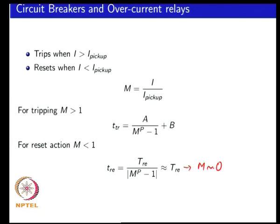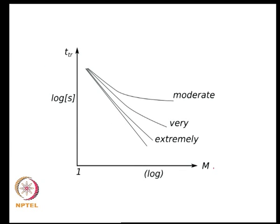In these expressions, A, P, B, and T_RE are constants depending on the type of characteristic you are trying to emulate in your circuit breaker. Depending on the values of A, B, and P, you can have different definitions of inverse current characteristics. IEC defines circuit breakers which are moderately inverse, very inverse, extremely inverse, etc. for time-current characteristics.